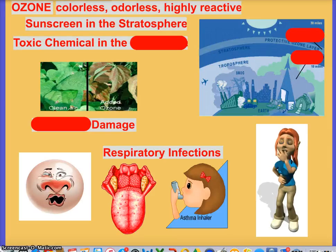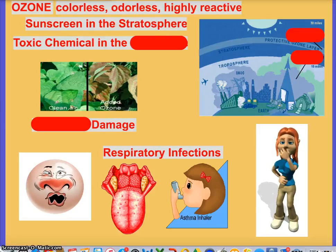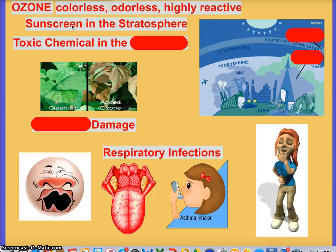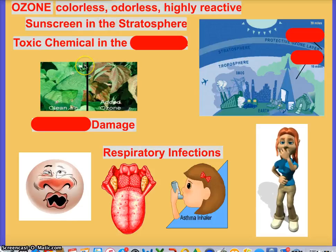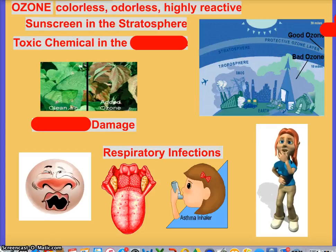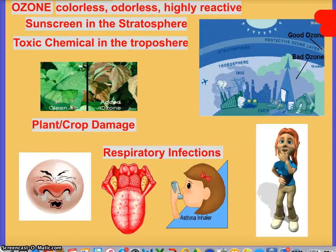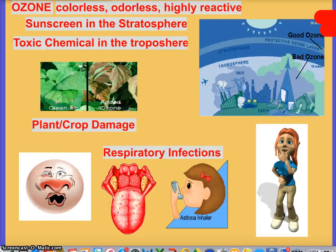We've talked about ozone being a great thing in the stratosphere — it's our sunscreen, and without it we're at risk from ultraviolet radiation. But in the lower layer, the troposphere, ozone is bad. It's a toxic chemical that damages plants and leads to respiratory infections just like any other pollutant. It's just not a primary pollutant.